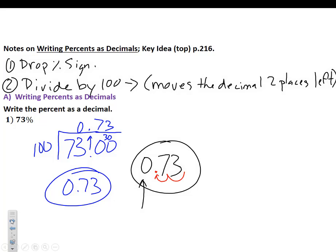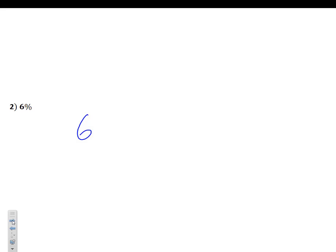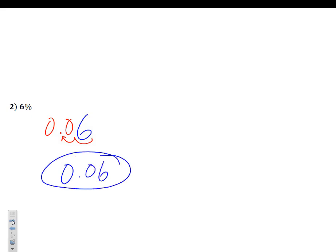Go ahead and pause the video to copy these notes down. Example number 2: 6%. Take 6%, drop the percent sign, and move the decimal two places to the left. I don't see it but I know it's there — one, two. Put that decimal in, add a leading zero and another zero to hold the place value. Final answer: 0.06.